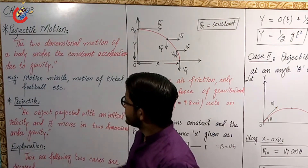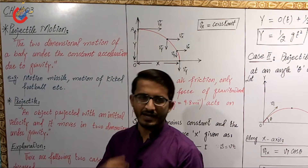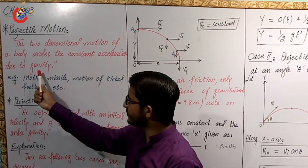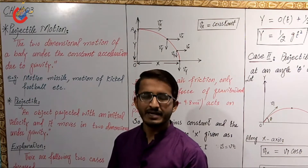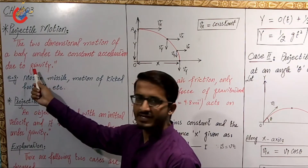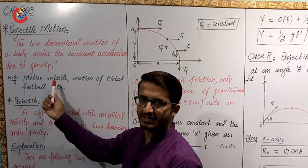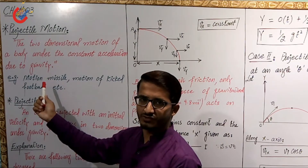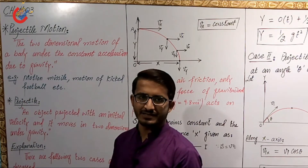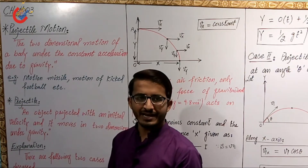What is projectile motion? The definition is: the two-dimensional motion of a body under the constant acceleration due to gravity. The body moves in two directions but the acceleration is only due to gravity, which keeps a constant value. For example, the motion of a missile when it moves under the action of gravity — if we ignore the frictional effect, we say the body performs projectile motion. Second example: the motion of a kicked football under gravity — if we ignore friction, the football performs projectile motion.